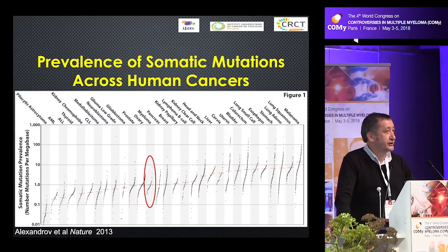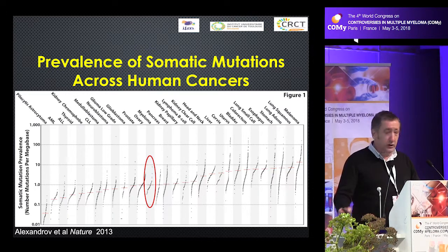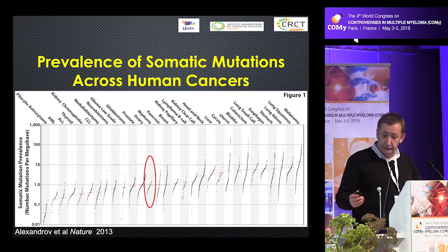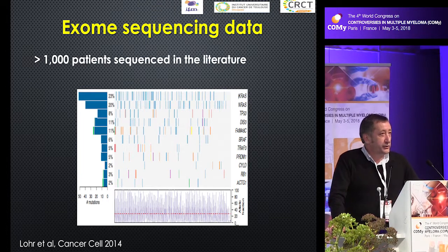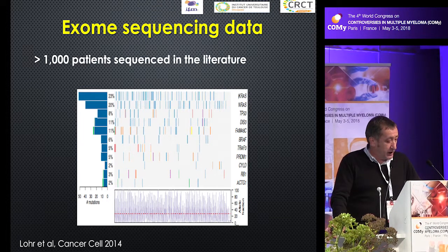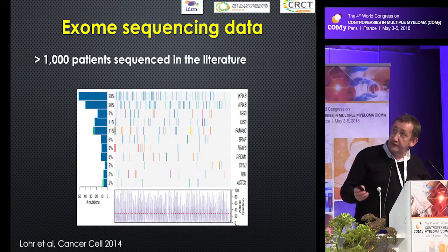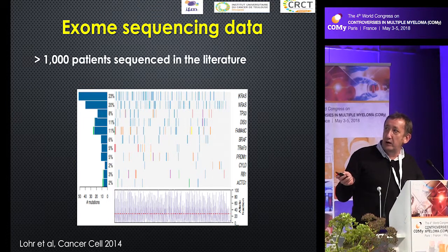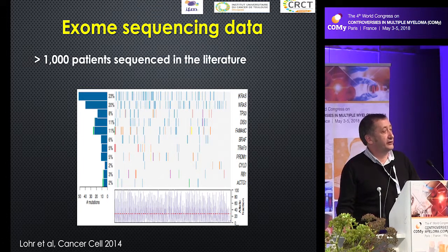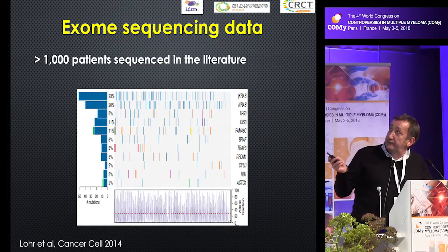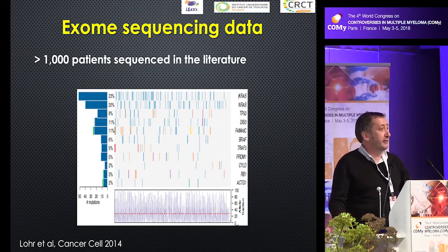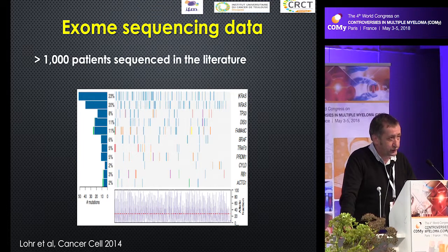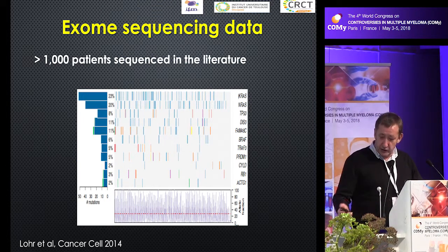This could have consequences for the future when we go to immune therapy, and especially checkpoint inhibitors. More than 1,000 patients have been exome sequenced, and if we try to categorize these patients, we can see that about half have either a KRAS or NRAS mutation, and after that all the other mutations are very low: 11% for DIS3 and FAM46C, 8% for TP53 mutation, BRAF in 6%, and after that it's very low. Myeloma is very heterogeneous, and it is very difficult to propose a classification based on these abnormalities.